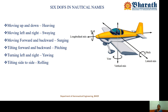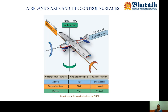As far as your aircraft is concerned, we represent all three translation motions and rotational motions in nautical terminologies. If an aircraft is moving up and down, you call that heaving. When it is moving right and left, you call that swaying. When it is moving front and back, that is surging. Tilting forward and backward is pitching. Turning left or right is yawing. Tilting to the left or right is called rolling. These are the 6 degrees of freedom in nautical terminologies for your aircraft.